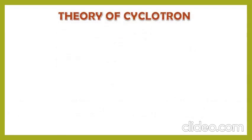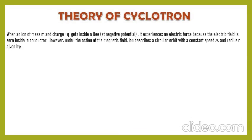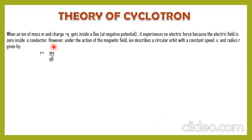Now we discuss the theory of the cyclotron. When an ion of mass m and charge q+ gets inside a D, it experiences no electric force — as per Gauss's law, the electric field is zero inside a conductor. However, under the action of the magnetic field, the ion describes a circular path with a constant speed v and radius r given by this formula. Let's see how this formula is derived.